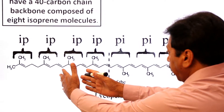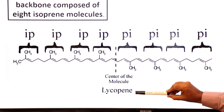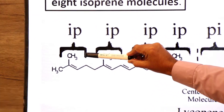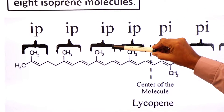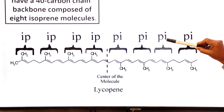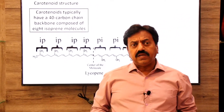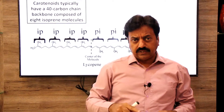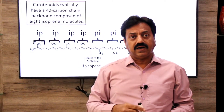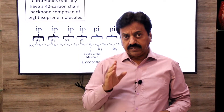Here we have a carotenoid diagram, and this carotenoid is known as lycopene. So if we have 8 isoprene units combined, this will be a tetraterpene.